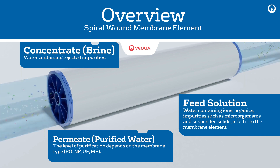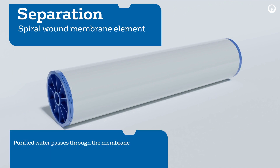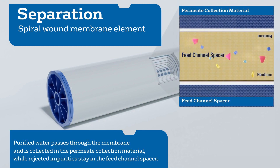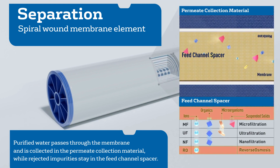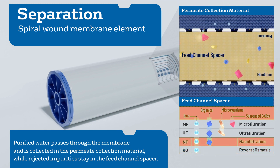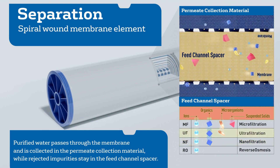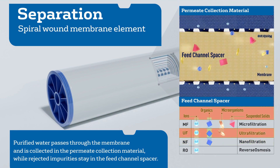The degree of separation in the element is dictated by the membrane. As the feed solution passes across the membrane in channels created by the spacer, the separation occurs. The illustration shows how different membrane types separate different sizes of materials. Here the smaller material passes from the feed channel across the membrane and into the permeate.